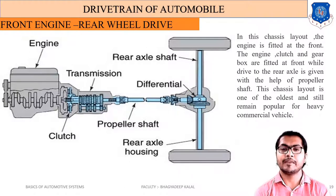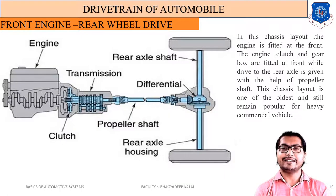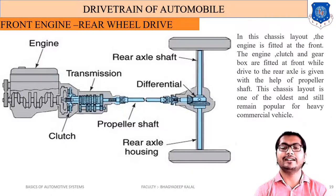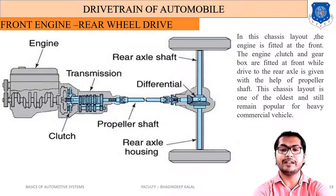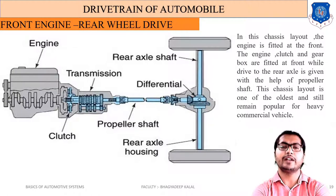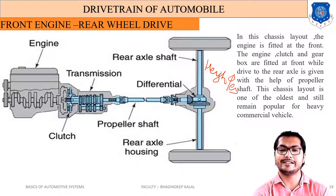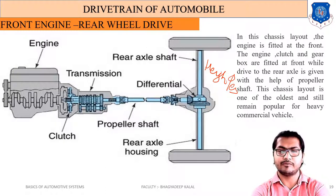The definition of front engine rear wheel drive: in this chassis layout, the engine, clutch, and gearbox are fitted at the front, while drive to the rear axle is given with the help of a propeller shaft. This layout is one of the oldest and still remains popular for commercial vehicles. The height of the vehicle increases because the propeller shaft is used.